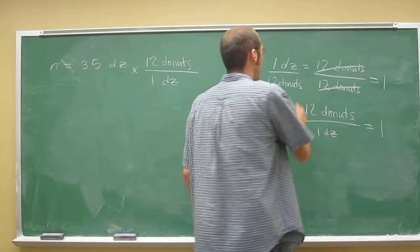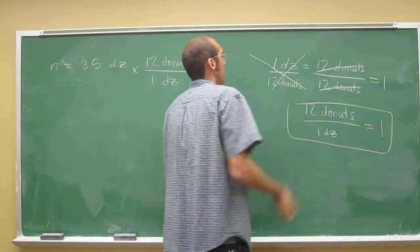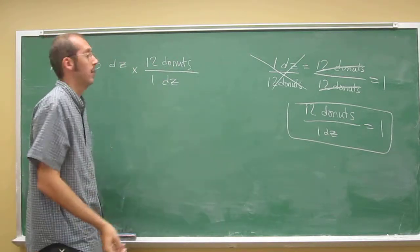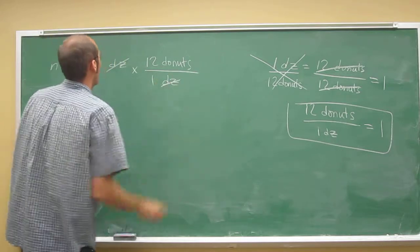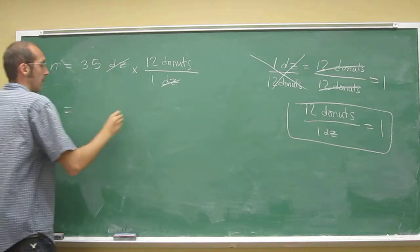Why do I use this one instead of this one? I don't use that one because I want to cancel out my dozens and I want to get doughnuts. So, dozen over dozen cancels out and we get doughnuts left over.